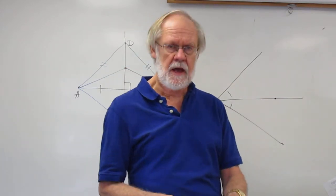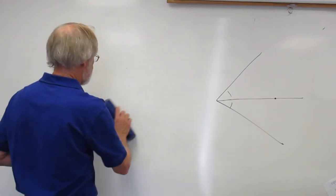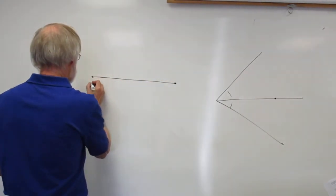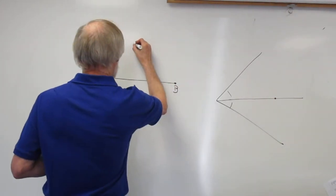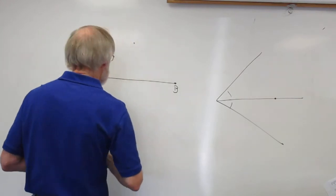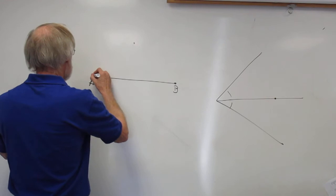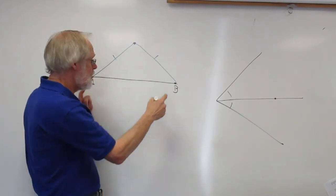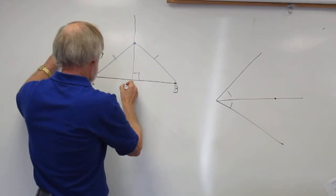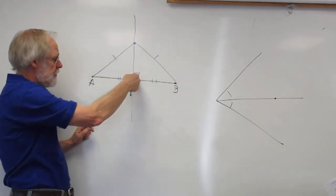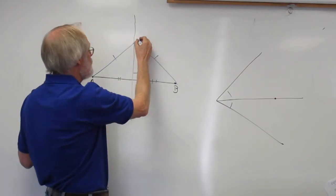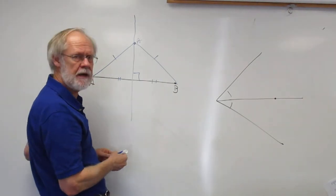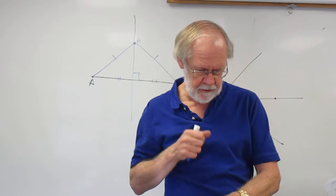Theorem 5.2 is the converse. If a point is equidistant from the endpoints of a segment, then it lies on the perpendicular bisector. So this would be the perpendicular bisector, and point A is on the perpendicular bisector because it is equidistant from the two endpoints of segment AB. So that's the Perpendicular Bisector Theorem and its converse.